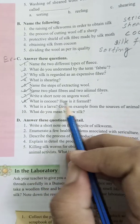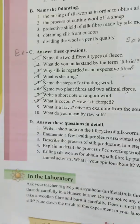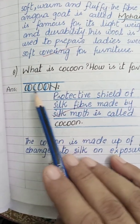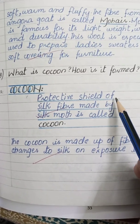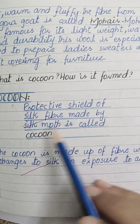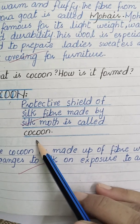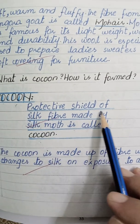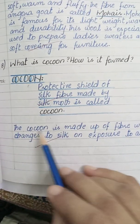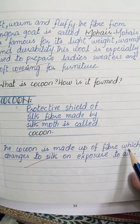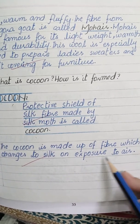Question number 8: What is a cocoon and how is it formed? Give the heading of cocoon and write the answer: A protective shield of silk fiber made by a silk moth is called a cocoon. This definition should be centralized and underlined in blue. The cocoon is made up of fiber which changes to silk on exposure to air.